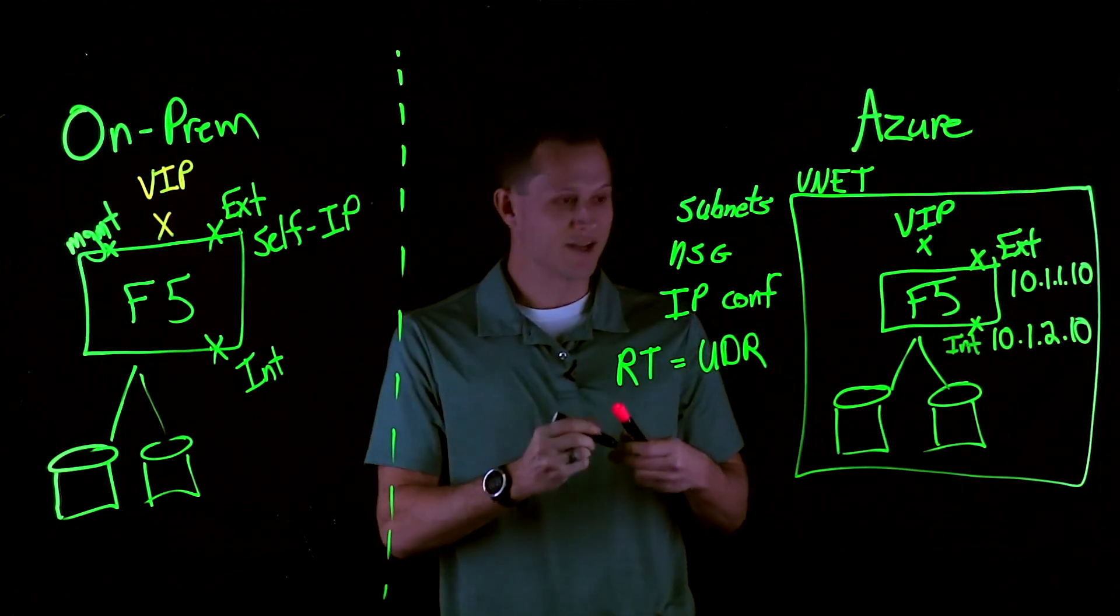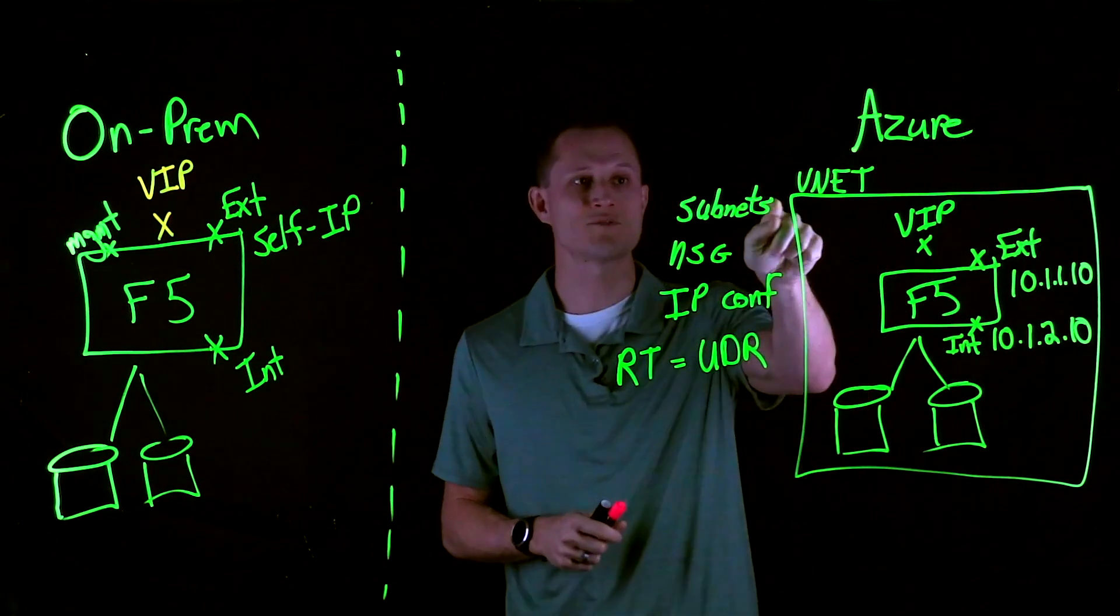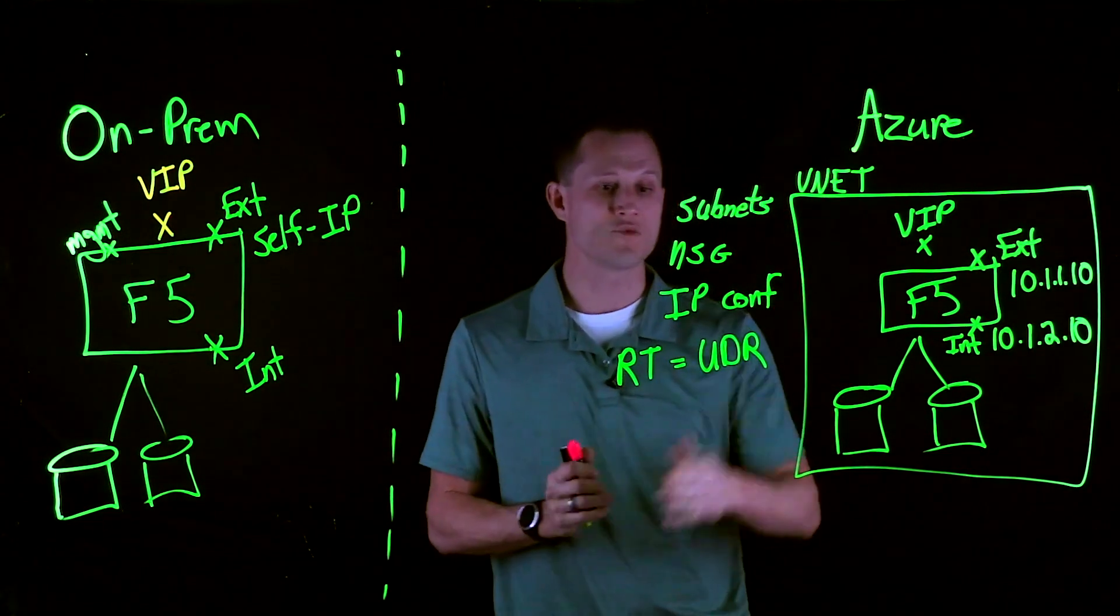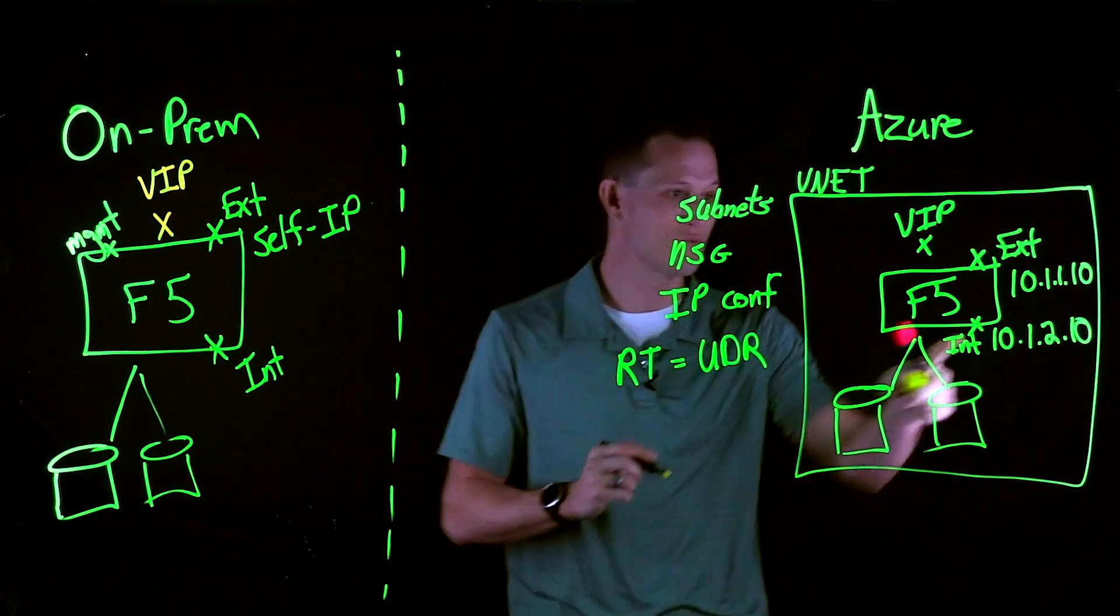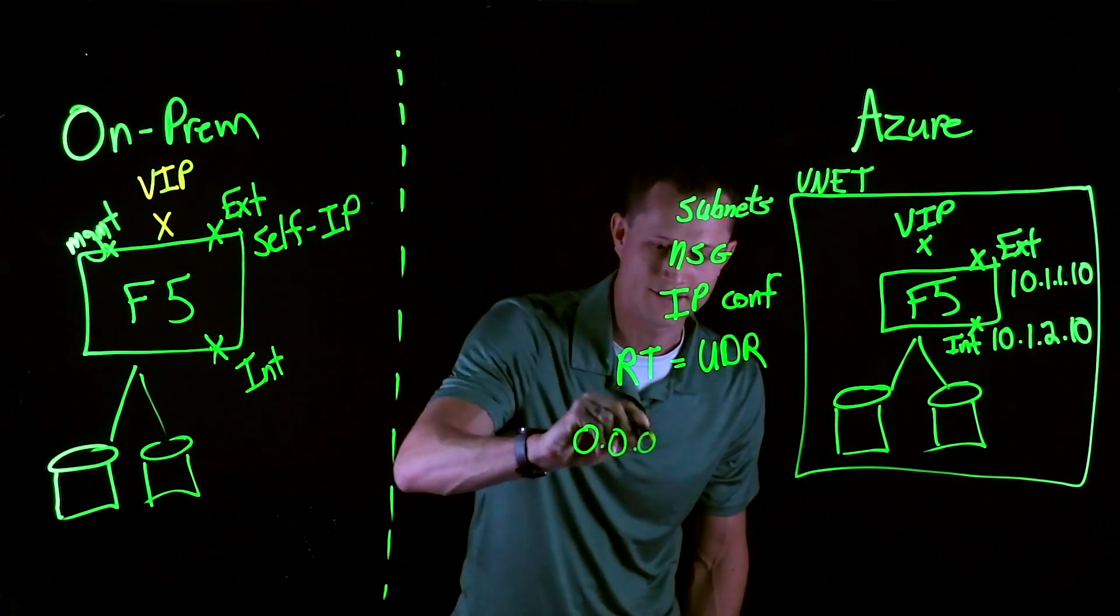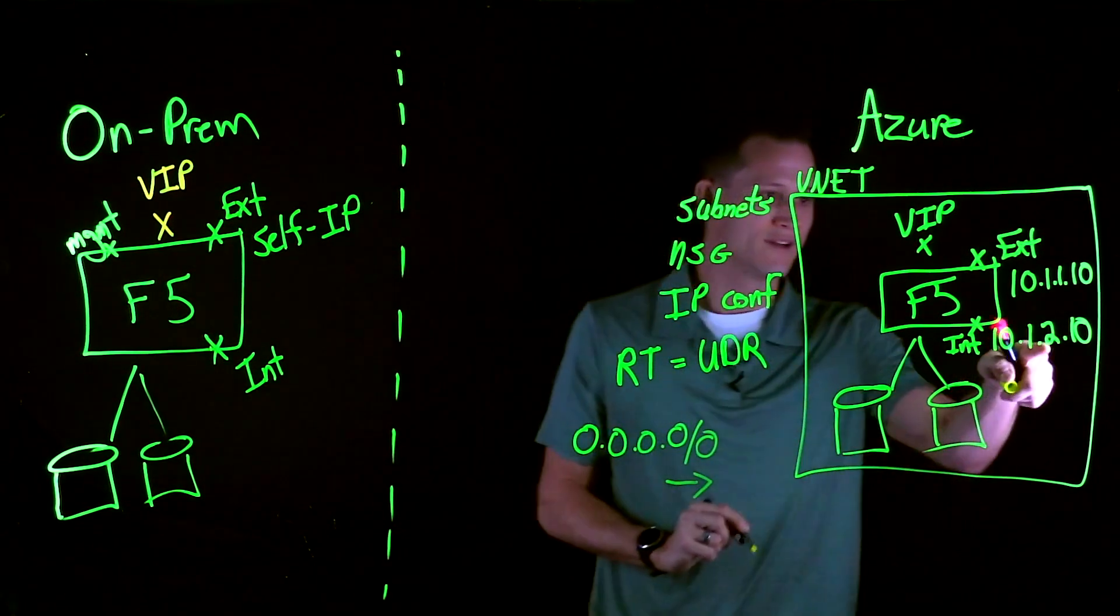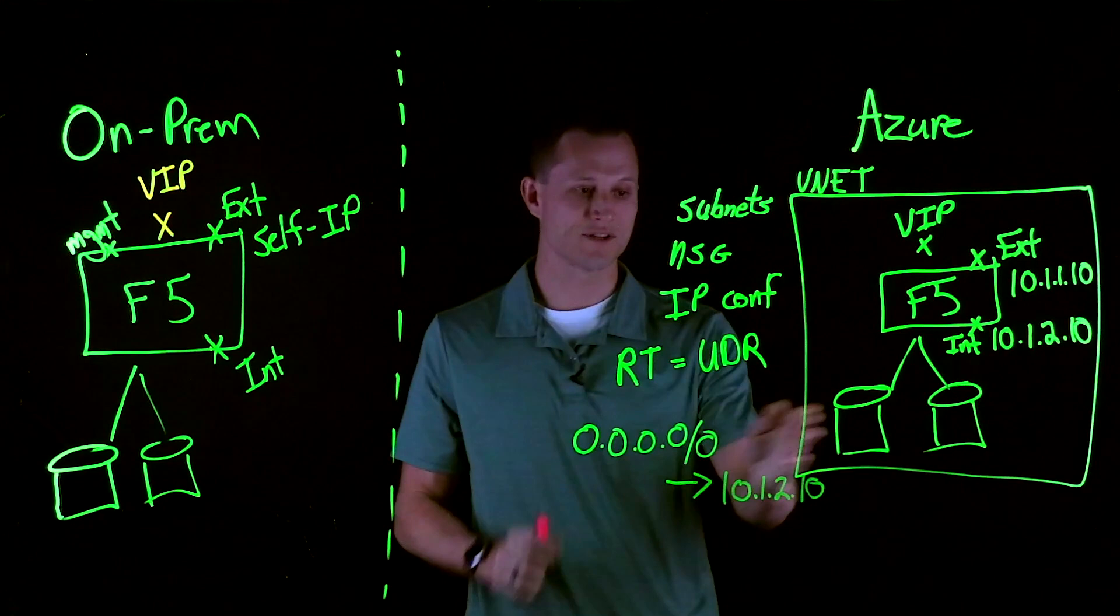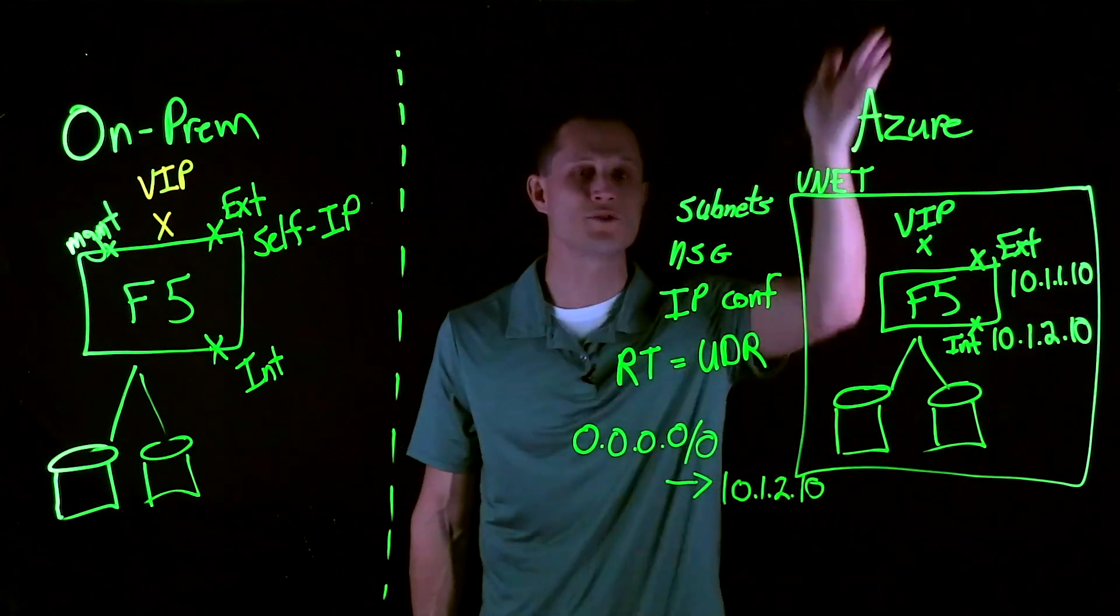If, for example, the back-end servers want to send all their default traffic to a next hop of a network virtual appliance, this doesn't work in a normal scenario because all the default system routes will go to the hypervisor. So we can accomplish this by adding a user-defined route. And what does that look like? If you're familiar with on-prem routing, what you do is take an address prefix. In this case, we want to send all traffic out, so we're going to send 0.0.0.0/0, next hop 10.1.2.10. This allows the back-end servers to send all traffic to the F5, which can then be processed for security and traffic management out to the next hop.